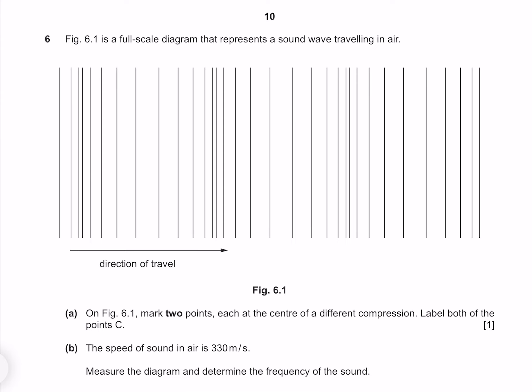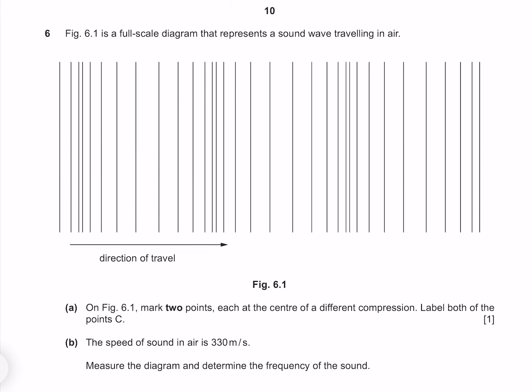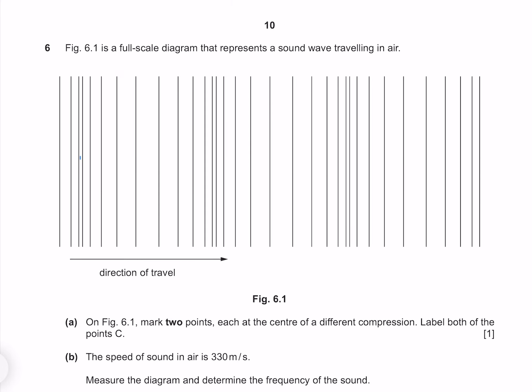Figure 6.1 is a full-scale diagram representing a sound wave travelling in air. On figure 6.1, mark two points each at the centre of a different compression and label both points C. We have four compressions here and as per the question we'll label two of them C.